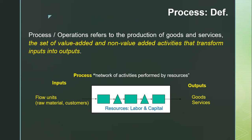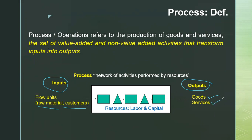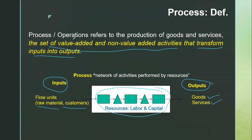A process or operation basically refers to the production of goods or providing services to the customer. The key thing is that we are converting inputs into outputs — raw materials are converted into finished goods, or customers and patients receive services — using a set of value-added and non-value-added activities.